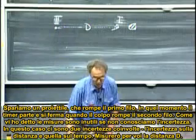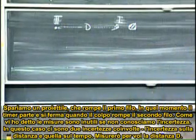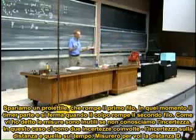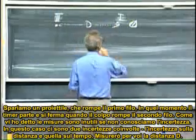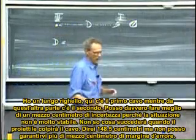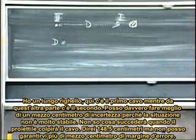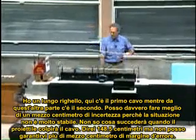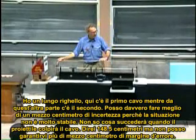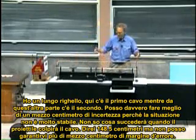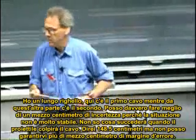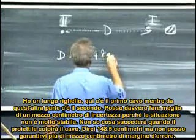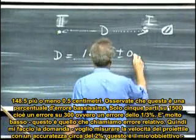Now, I told you a measurement is meaningless without knowledge of the uncertainty in your measurement. So there are two uncertainties involved, the distance and the timing uncertainty. This distance, I will measure for you, d. I have here a large ruler. Here is one wire. Here is the other wire. I cannot do that any better, really, than maybe even half a centimeter because the situation is not all that stable. I don't know what happens when the bullet will hit the wire. So I would say it is 148 and a half centimeters, but I cannot guarantee it to better than half a centimeter. 148 and a half plus or minus 0.5 centimeters.